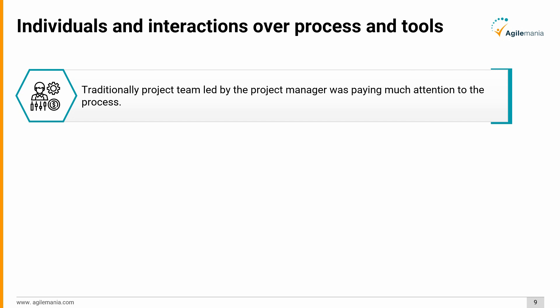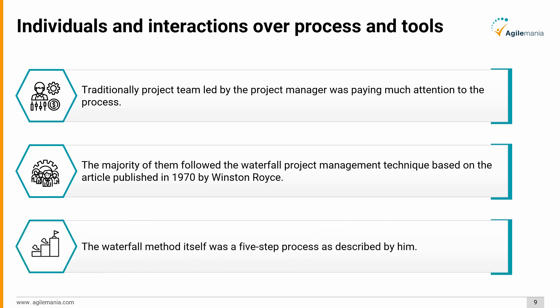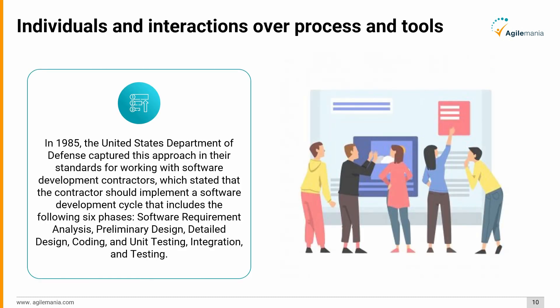Traditionally, the project team led by the project manager paid much attention to the process. The majority followed the waterfall project management technique, based on the article published in 1970 by Winston Royce. The waterfall method itself was a five-step process as described by him. In 1985, the United States Department of Defense captured this approach in their standards for working with software development contractors, stating that the contractor should implement a software development cycle including six phases: software requirement analysis, preliminary design, detailed design, coding and unit testing, and integration and testing.